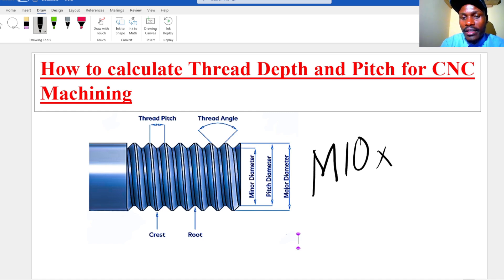M10 by 1.5. M10 represents the bolt size and 1.5 represents the pitch of the bolt. It also goes the same with the nuts. Now let us see how we calculate thread depth for an M10 bolt.